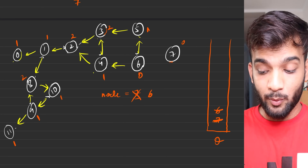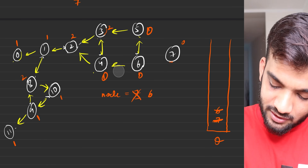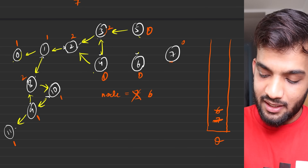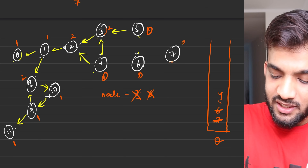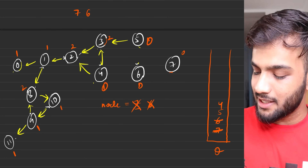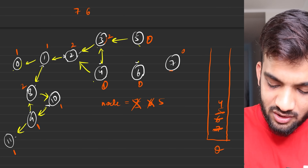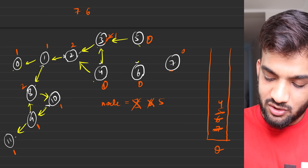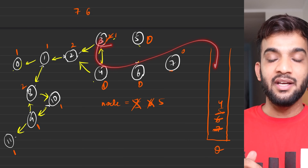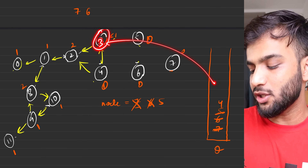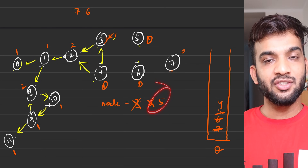Processing six: six points to five and four. Reducing their in-degrees brings both to zero, so five and four enter the queue. Six is marked as a safe node. Processing five: five has one adjacent node with in-degree two, reduced to one — not zero, so it doesn't enter the queue yet. Five is marked as a safe node.